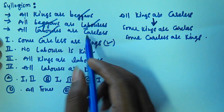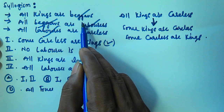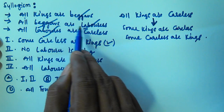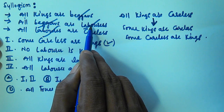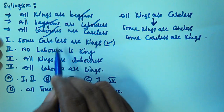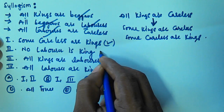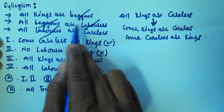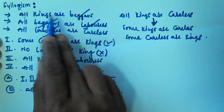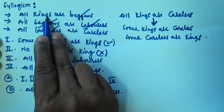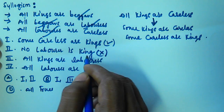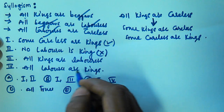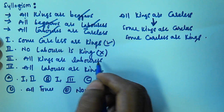Now checking conclusion 2: no labor is a king. From the first two statements, beggars cancel and we get all kings are laborers. By converting, we get some laborers are kings — so 'no labor is a king' is false.